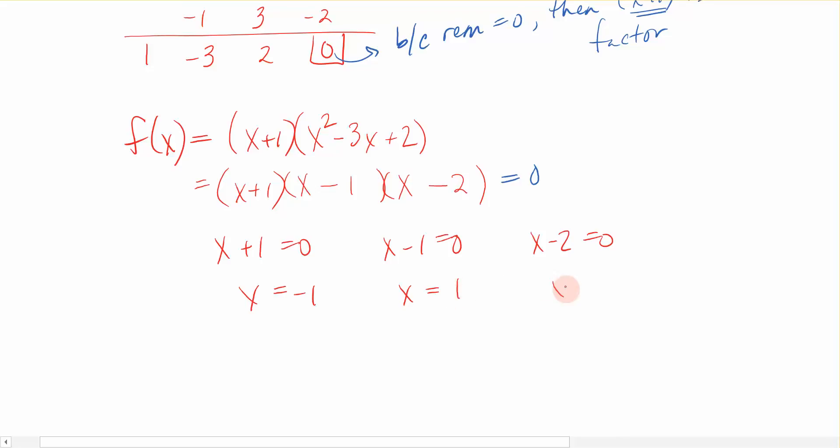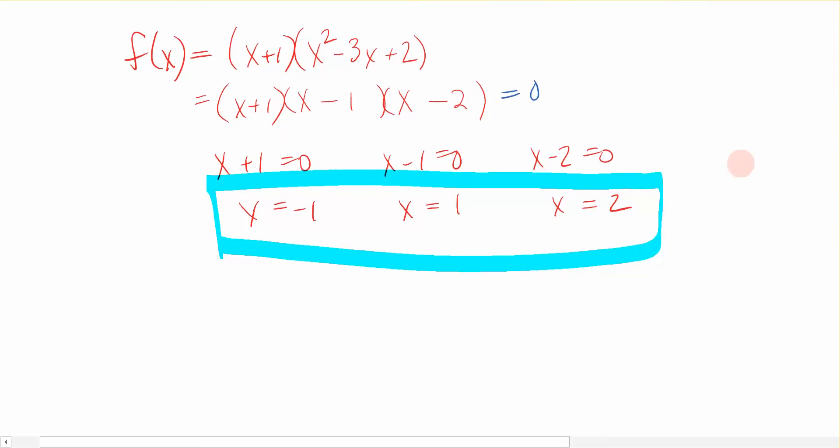And these all become x is negative 1, x is positive 1, x is positive 2. All three of these numbers are the zeros. They're the zeros of my function f. They're all zeros of my function f. I wouldn't have known that, though, unless I was able to take my polynomial and put it in its factored form.